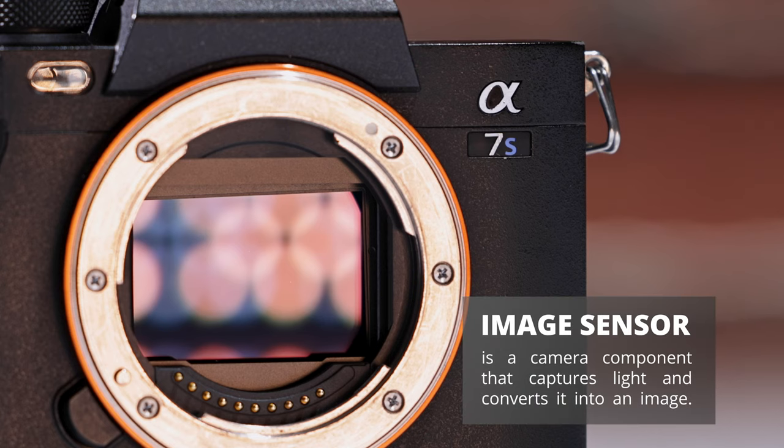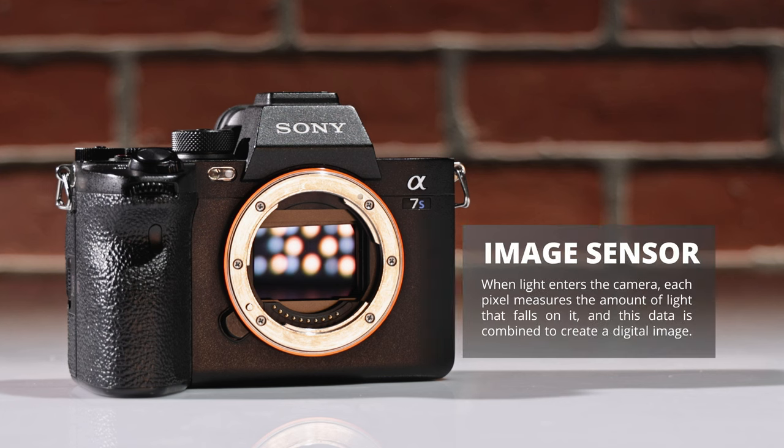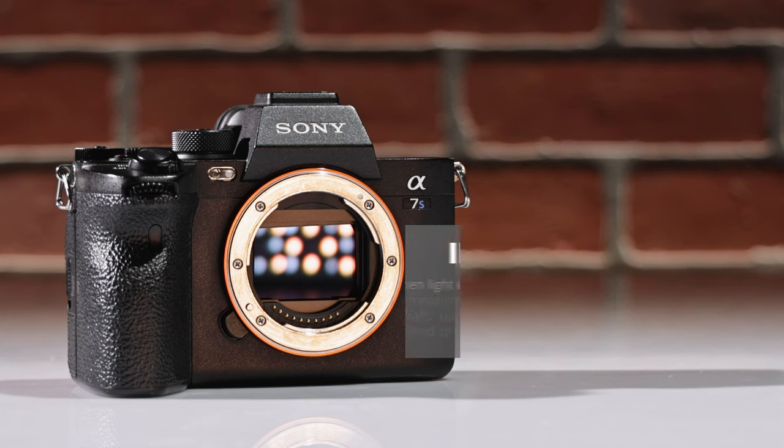So what is an image sensor? An image sensor is a camera component that captures light and converts it into an image. When light enters the camera, each pixel measures the amount of light that falls on it, and this data is combined to create a digital image. Image sensor noise occurs when pixels record random fluctuations in incoming light, resulting in variations in the brightness and color of the video. These variations appear as speckles or grain in the video footage, which we call noise.